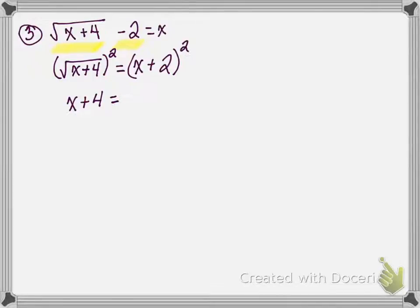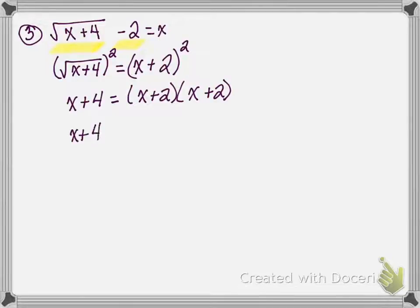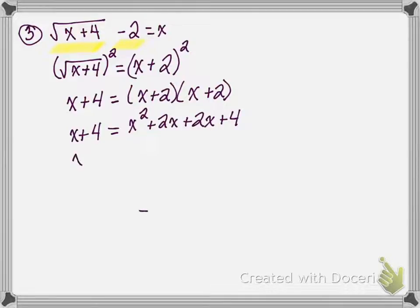On the right side of the equation, I have x plus 2 in parentheses, and that is squared. I have to FOIL that now — it is not x squared plus 2 squared. Many students do that, and that is incorrect. So I FOIL x plus 2 times x plus 2 and get x squared plus 2x plus 2x plus 4, which simplifies to x squared plus 4x plus 4.